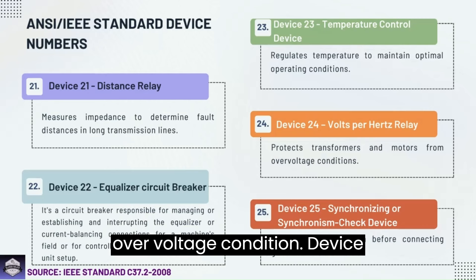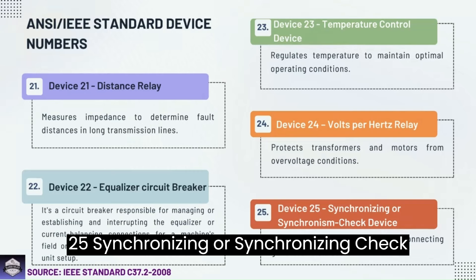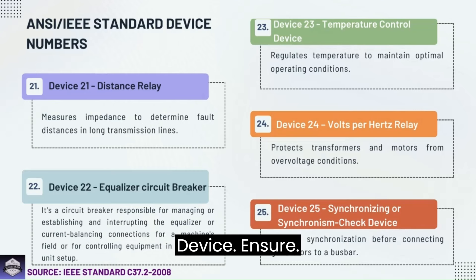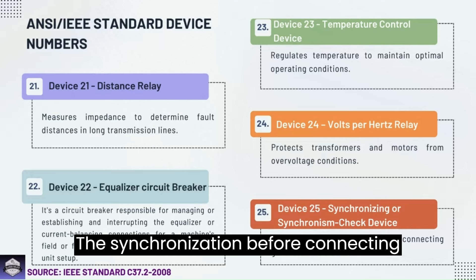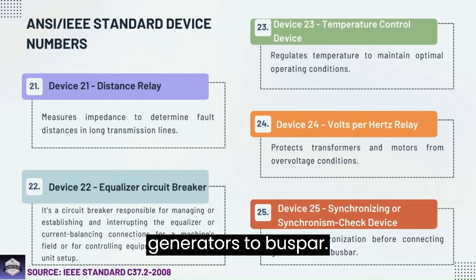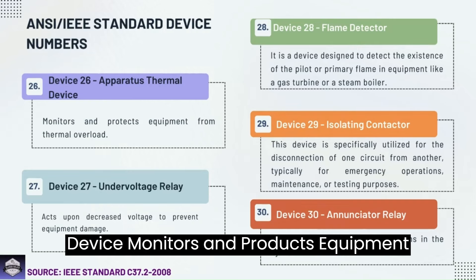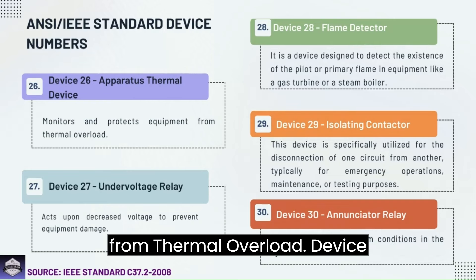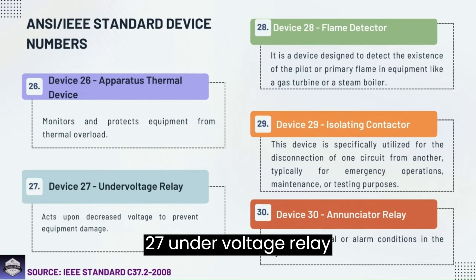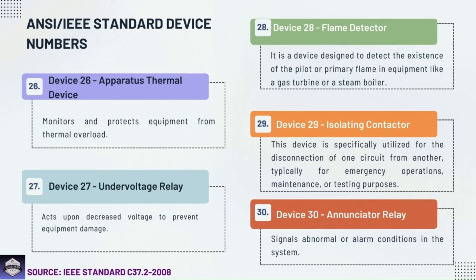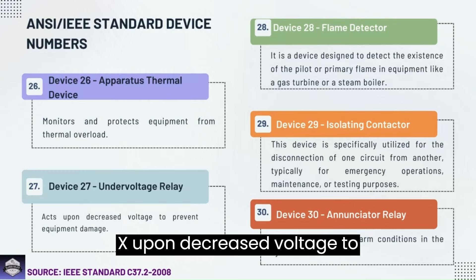Device 25: Synchronizing or synchronization check device — ensures synchronization before connecting generators to a bus bar. Device 26: Apparatus thermal device — monitors and protects equipment from thermal overload. Device 27: Under voltage relay — acts upon decreased voltage to prevent equipment damage.